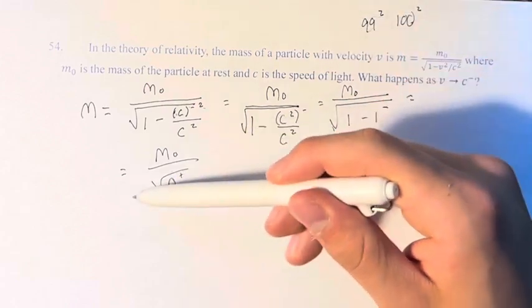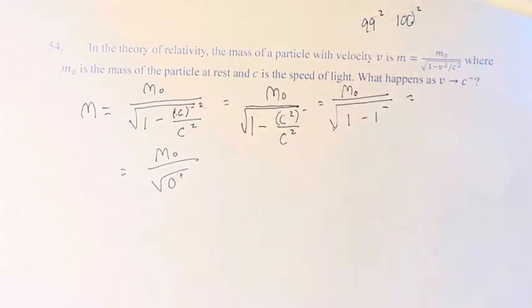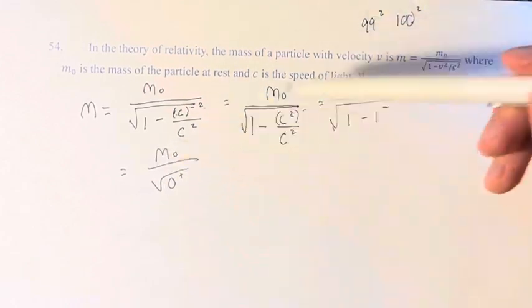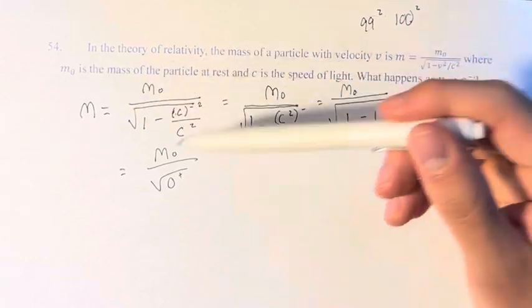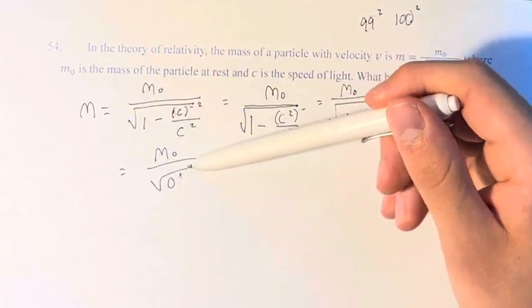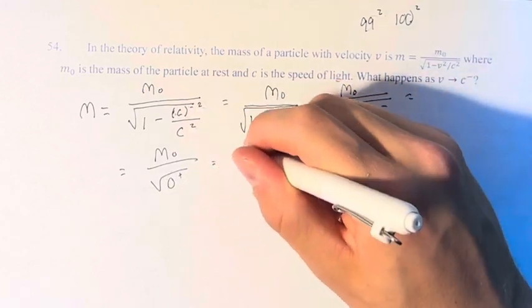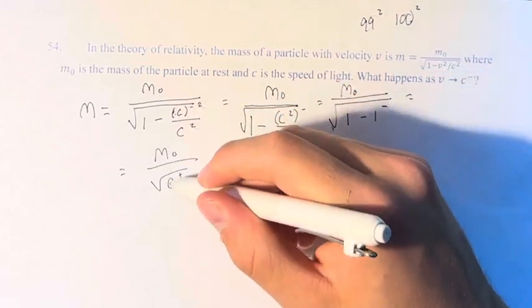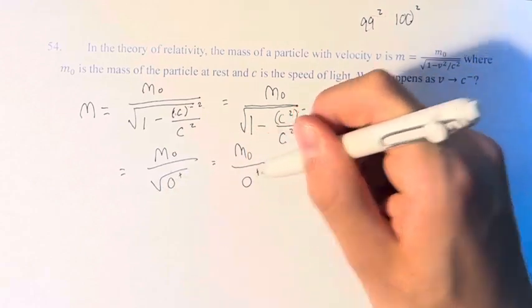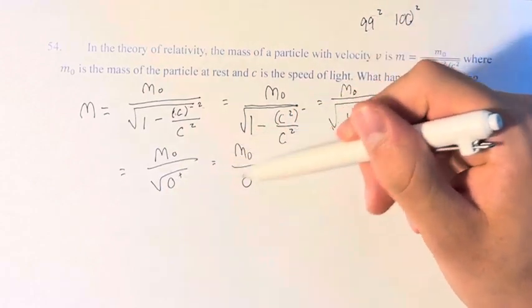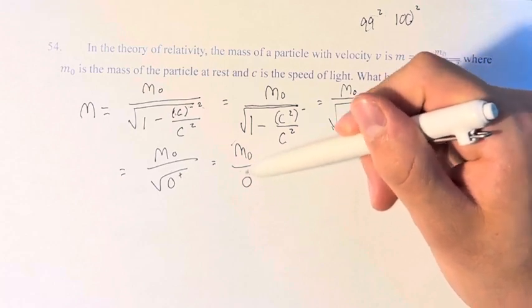This matters that it's not coming from the negative side, because if we take m₀, the mass at rest which is a constant, and divide it by 0, which is basically what this means. The square root of numbers approaching 0 are approaching 0 themselves. We're dividing this number by values approaching 0.